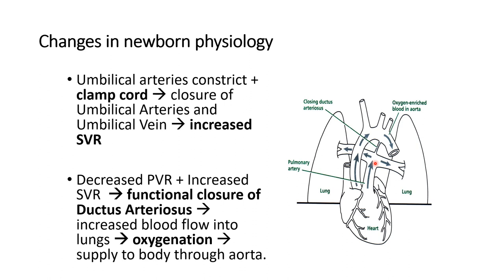Flow will no longer go from pulmonary vessels to the aorta. Umbilical arteries also constrict once you place the umbilical cord clamp, causing closure of the umbilical artery and vein and increased systemic vascular resistance. The pressure in the aorta significantly increases while pressure in the pulmonary vessels decreases. This decreased PVR and increased SVR lead to functional closure of the ductus arteriosus, which occurs within 72 hours of life. This leads to increased blood flow into the lung field, improved oxygenation, and oxygen supply to the body through the aorta.